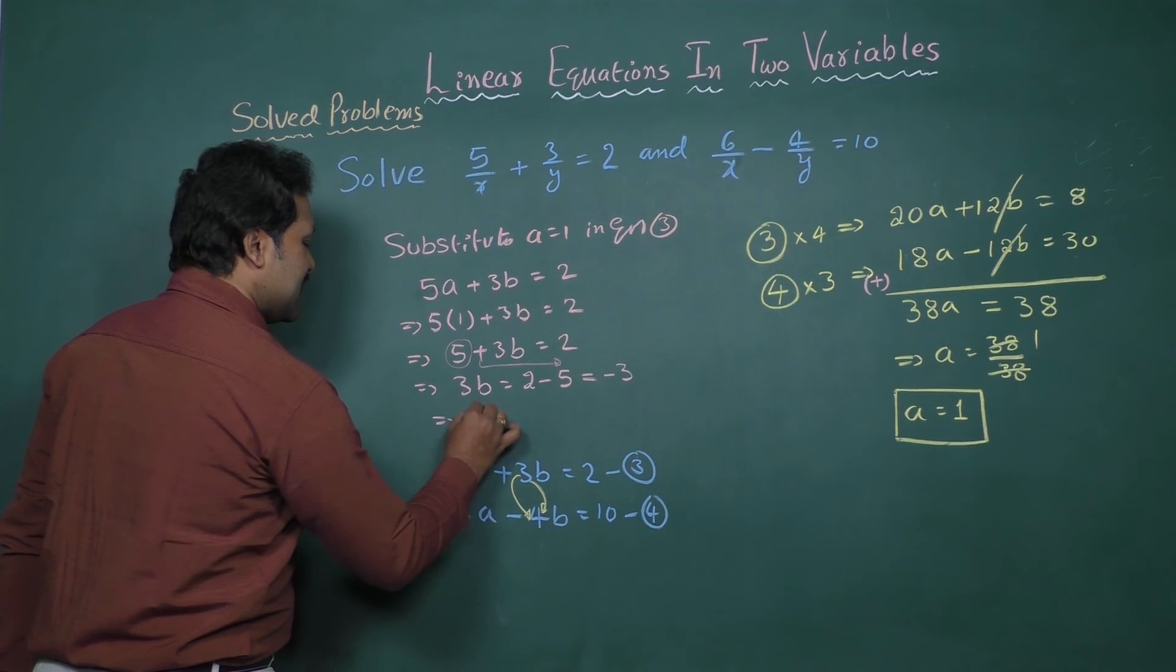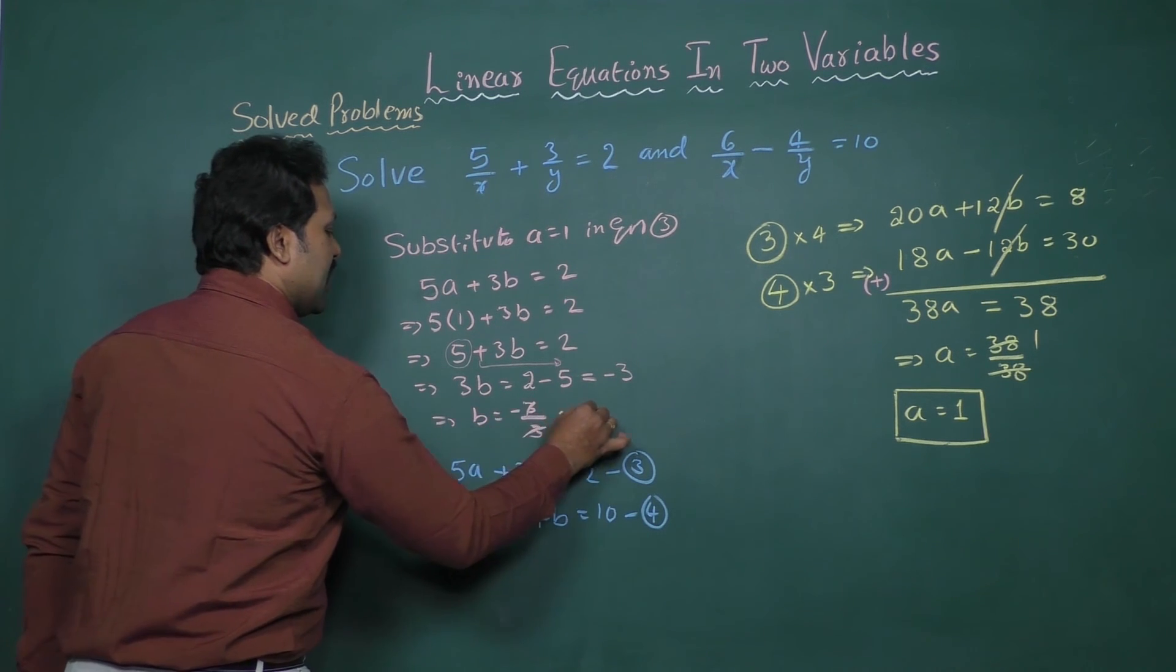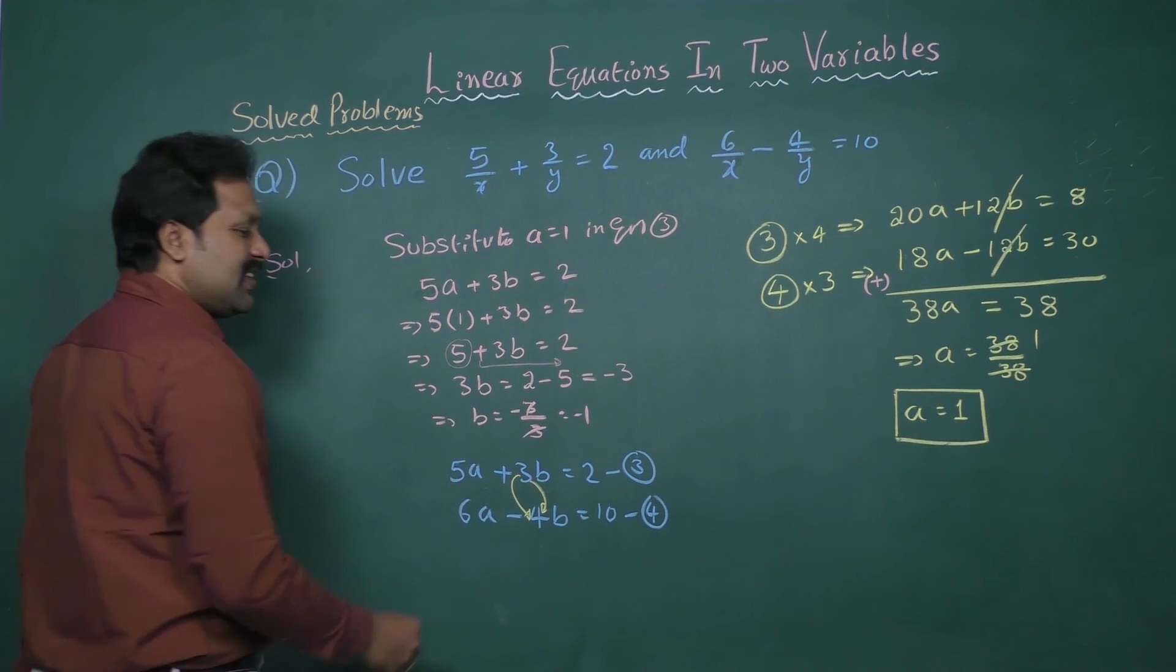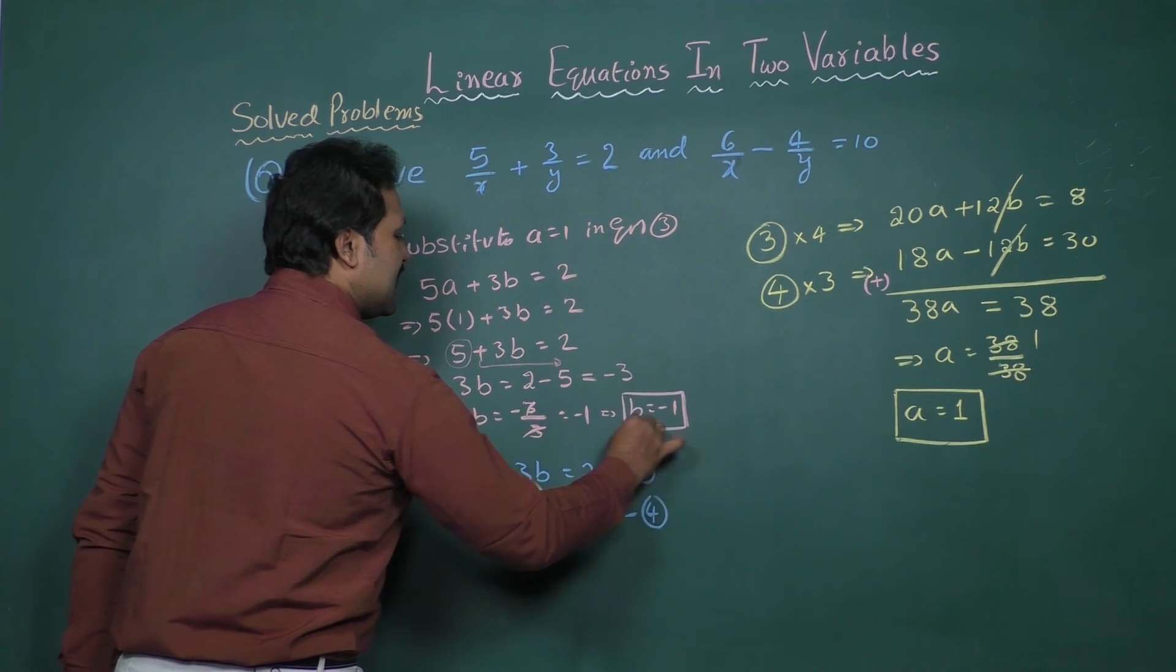That implies b equal to minus 3 by 3. We get minus 1. So b value is minus 1.